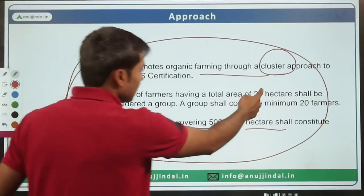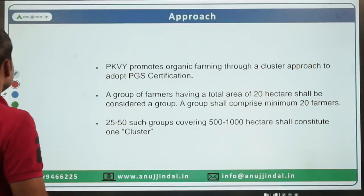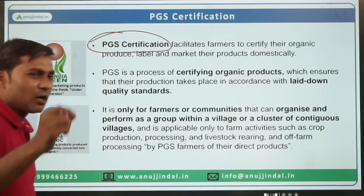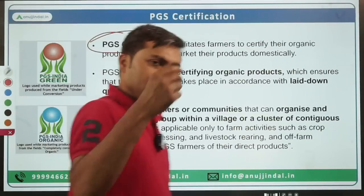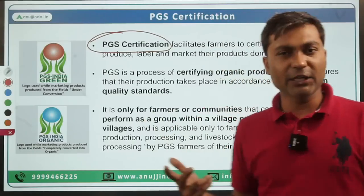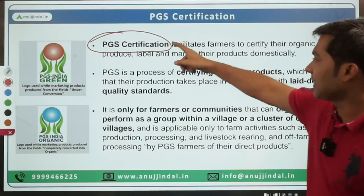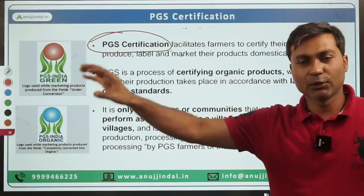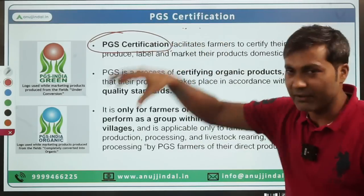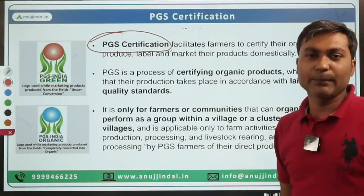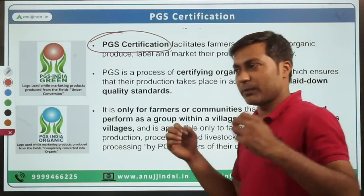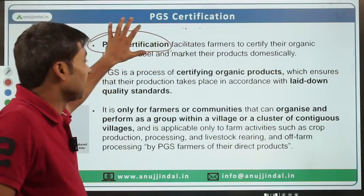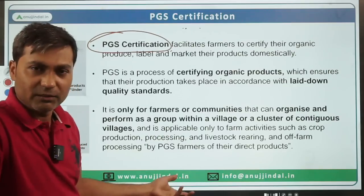Of course, you need to remember those numbers. Whenever we talk about organic products, there is a role of PGS certification — Participatory Guarantee System certification — which is the certificate given to all organic products. Any organic product produced must have this particular PGS certification. You need to make these links while studying.